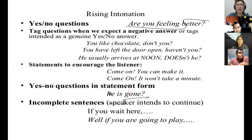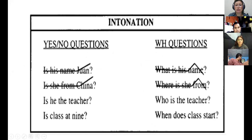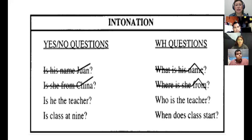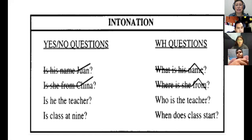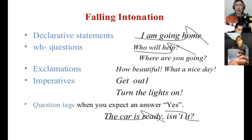This is the rising — it's always incremental at the end because we're talking about yes/no questions. For example: 'Is his name Juan?', 'Is she from China?', 'Is he the teacher?', 'Is class at nine?' — siempre va hacia arriba el tono. But notice how it changes with a WH question: we maintain the same sound level and when we get to the end, we go down. 'What is his name?' — la última frase va con falling intonation.